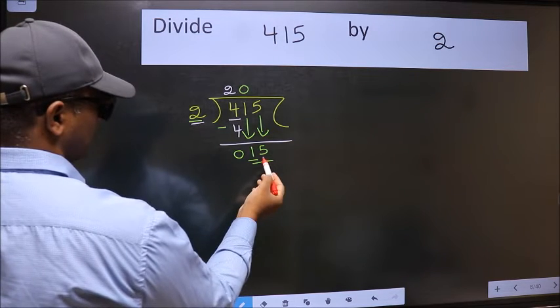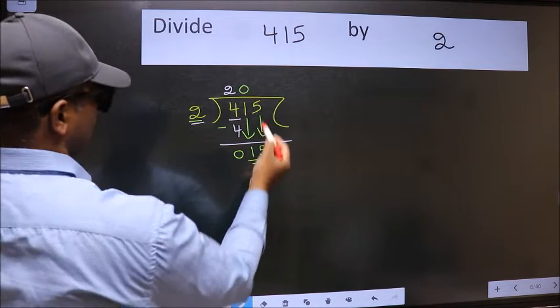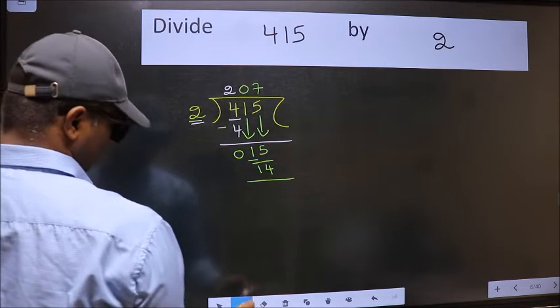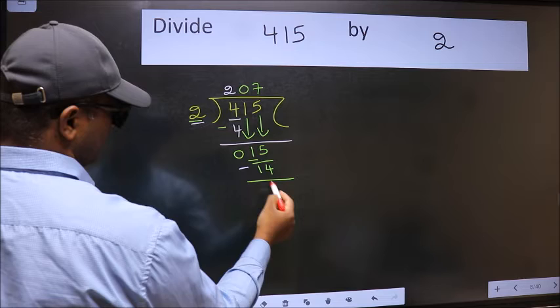Now 15. A number close to 15 in the 2 table is 2 times 7, which is 14. Now we should subtract. We get 1.